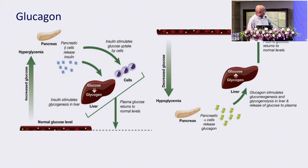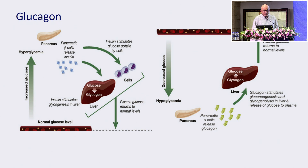This is what glucagon does. The pancreas releases insulin, which goes to the liver. The pancreas has alpha cells, which also communicate with the liver. They counterbalance each other and keep plasma glucose normal. When there's decreased glucose, the alpha cells increase glucagon. Glucagon stimulates gluconeogenesis and glycogenolysis, and plasma glucose remains normal.